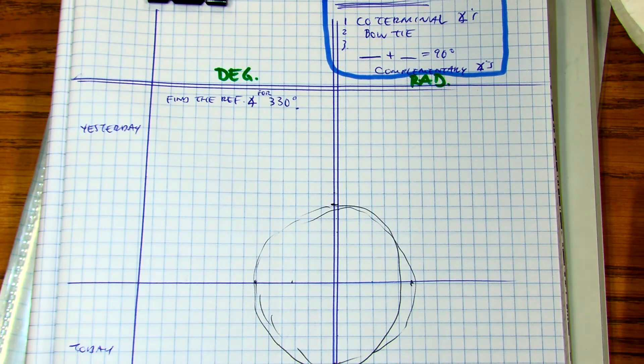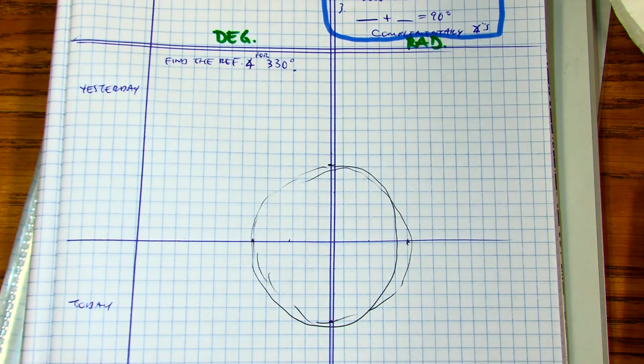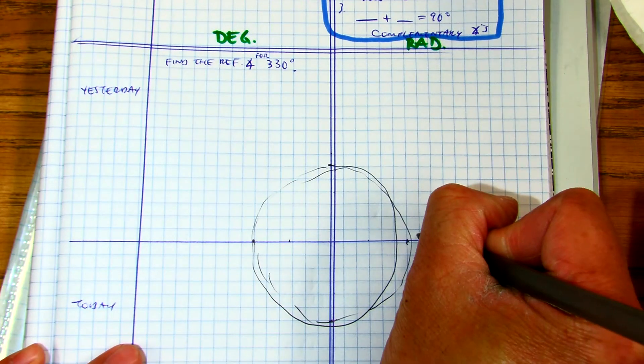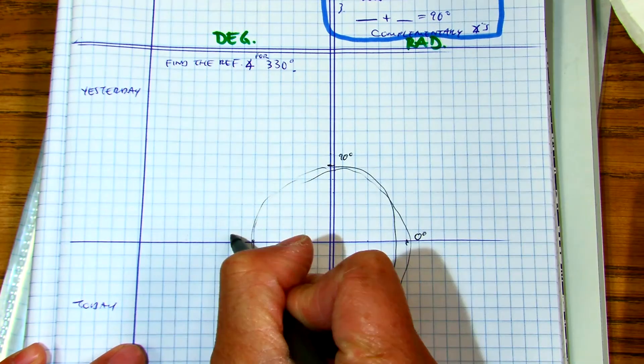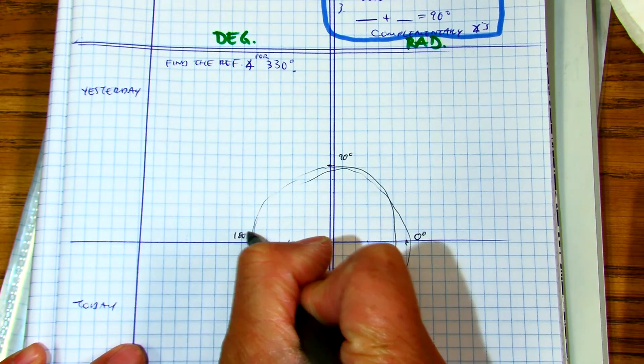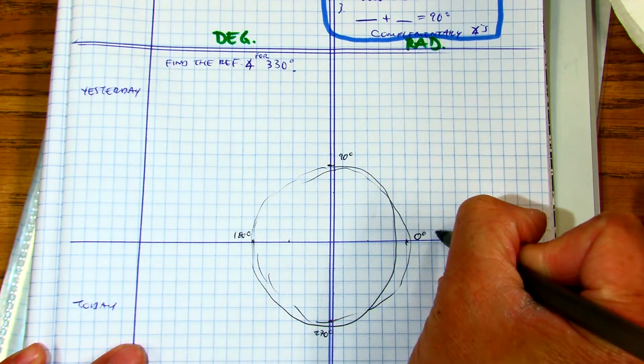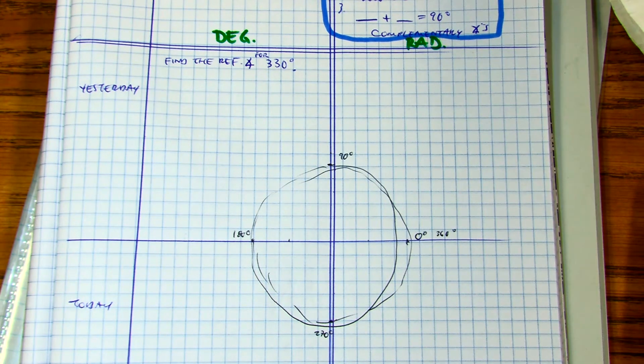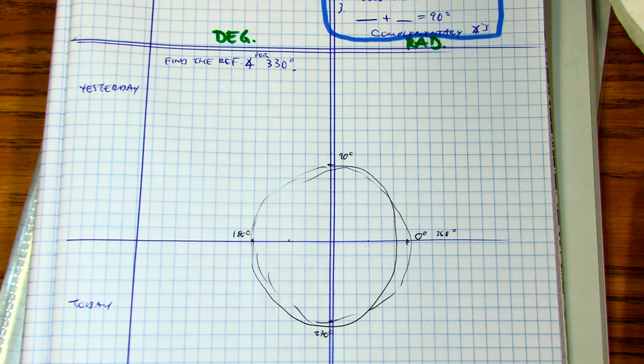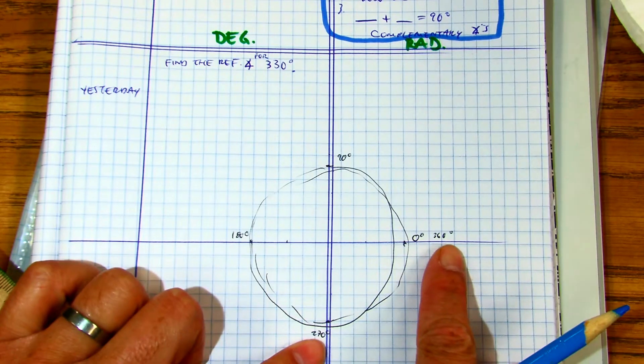Cynthia, I want you to label the quadrantal angles in degrees. Put your finger where 330 degrees is, class. The answer is quadrant four. 330 is between 270 and 360.